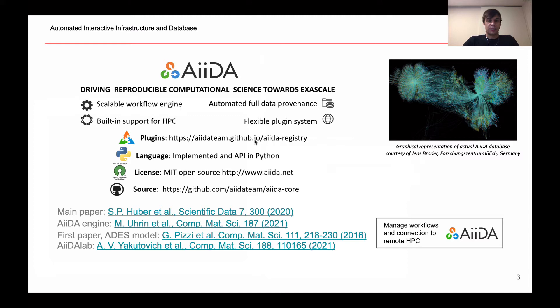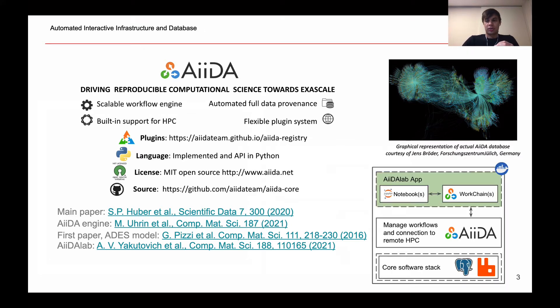AiiDA is written in Python. It comes with a MIT license, so it's fully open source and you can find the source code at the following link. AiiDA itself is a simulation manager, but this is built on top of Postgres database to store the results of the simulation and also the input data. And also AiiDA uses RabbitMQ message broker to interact with processes.